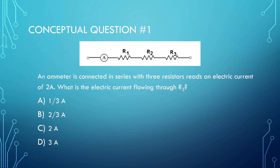An ammeter is connected in series with three resistors and reads an electric current of 2 amps. What is the electric current flowing through R3? You might think it'll be less — maybe 1/3 or 2/3 amps — or the same 2 amps, or more, 3 amps.